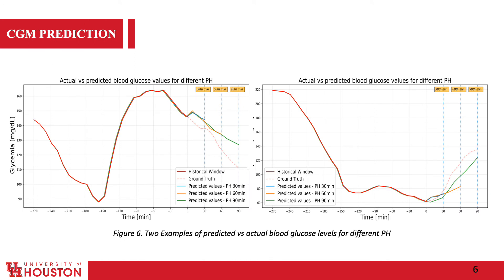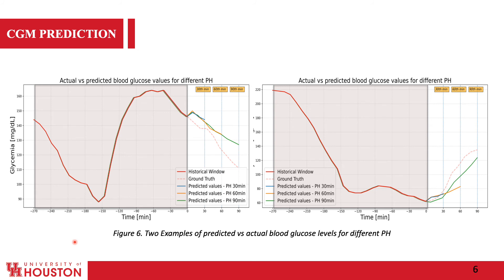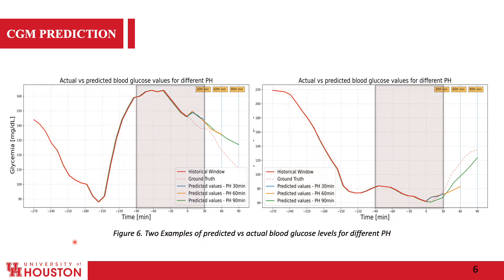In Figure 6 we can see two examples of the predicted CGM for different prediction horizons. The y-axis shows glycemia and the x-axis shows time. The highlighted part before time zero is the total historical data that the model uses for prediction. After time zero, we see the predicted values and the ground truth for each prediction horizon.